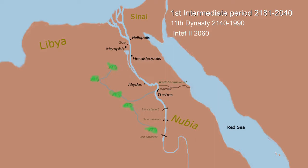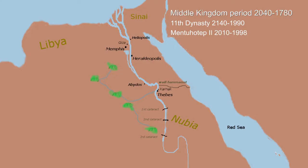The son of Intef II was Mentuhotep I. Mentuhotep united southern Egypt around Thebes, beginning a new dynasty which marked the beginning of the end of the Intermediate Period. His son Mentuhotep II actually conquered Heracleopolis and Memphis, uniting all of Egypt into one rulership and beginning the Middle Kingdom period of Egypt.